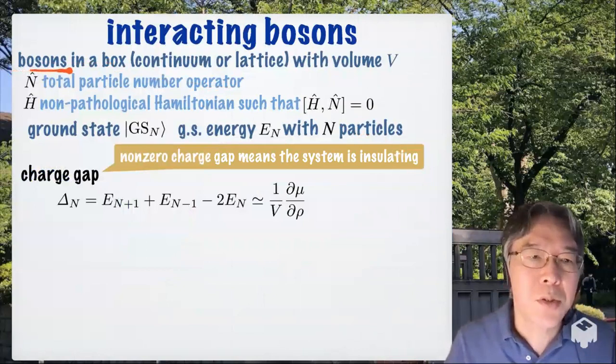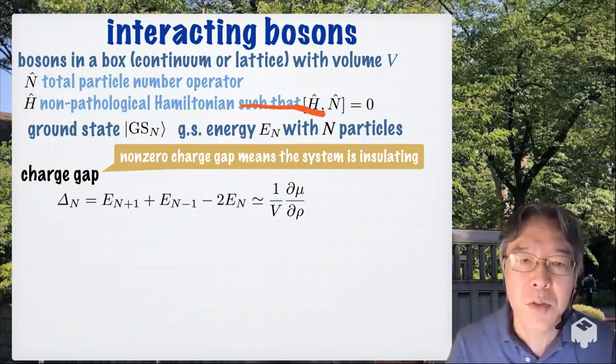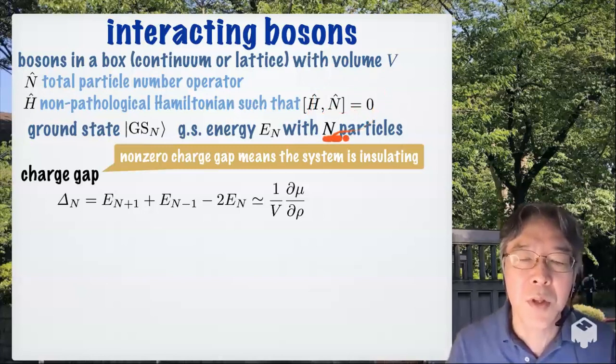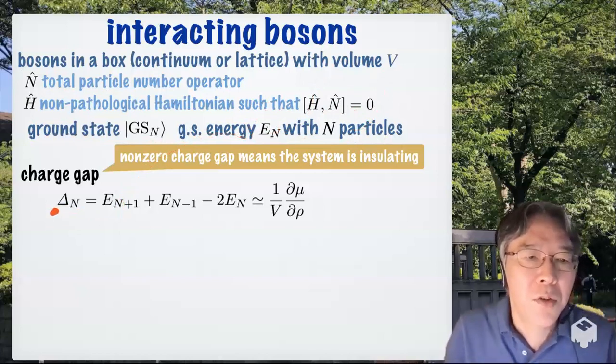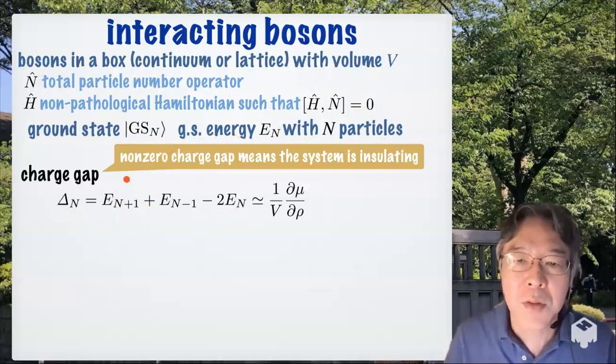Consider a system of bosons in a box. It can be continuum or lattice with some volume V. N hat is a total particle number. H hat denotes any non-pathological Hamiltonian that commutes with the number operator. And then with this property for each given N, we can talk about a ground state with N particles and the corresponding ground state energy, E_N. With this E_N, we define a quantity called the charge gap this way. And it is believed that if the charge gap is non-zero, then the ground state describes an insulator.